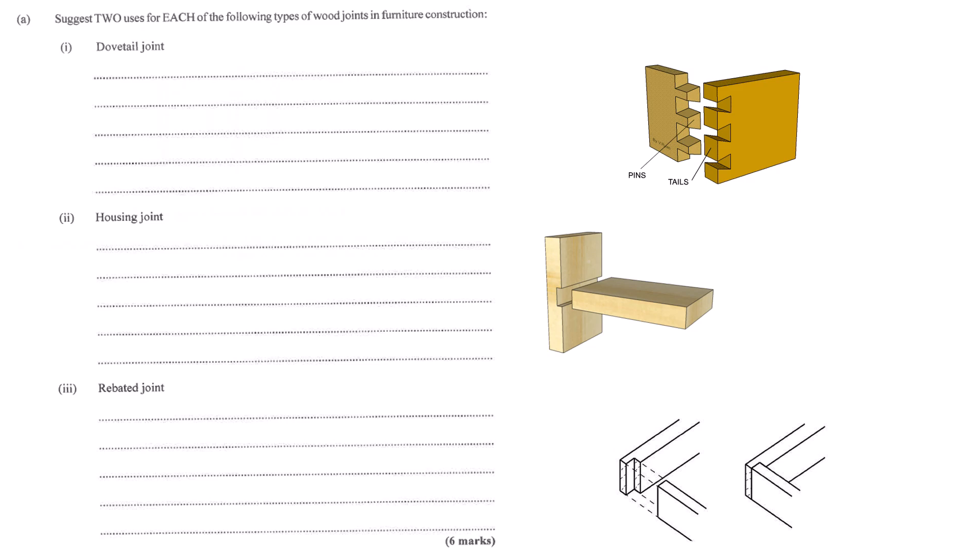How about a rebated joint? A rebate joint involves cutting a step, like a little L-shape, along the edge of one piece of wood. So the edge of the other piece can overlap and sit onto that step. Creates more surface area for glue, makes it stronger than just butting edges together. Often used in things like window frames or for fitting the back panel into a cupboard or cabinet. The back panel sits neatly into the rebate cut around the inside edge.